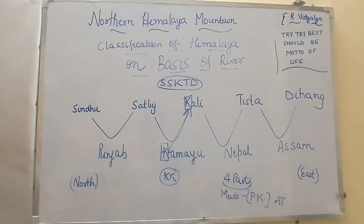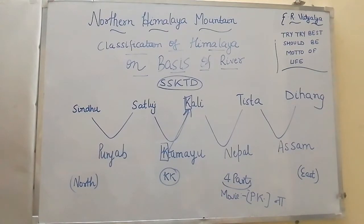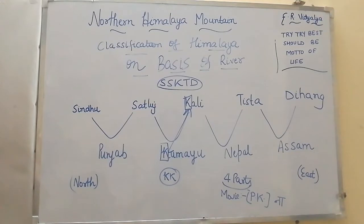Now, if we talk about what they are, you have to remember the song. The acronym is S.S.K.T.D.: Sindhu, Sataluj, Kali, Tishtha, Dihang — these rivers come from the Punjab Himalaya.